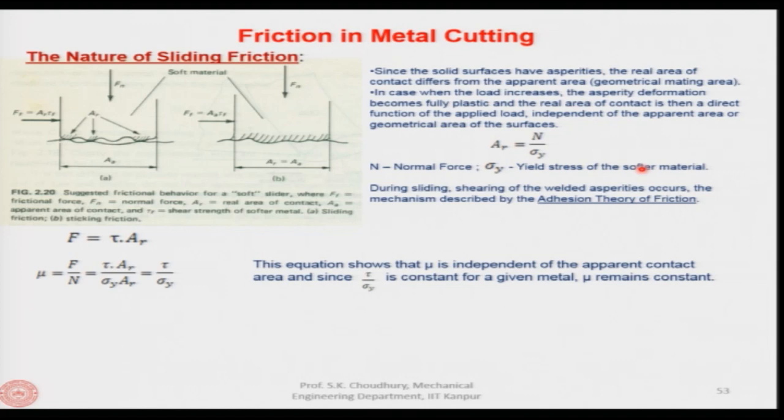This equation shows that mu is independent of the apparent contact area. That is the basic idea of sliding friction, and how it can be applied to machining — and how mu behaves in the case of metal cutting — will be discussed in the next class. Thank you for your attention.